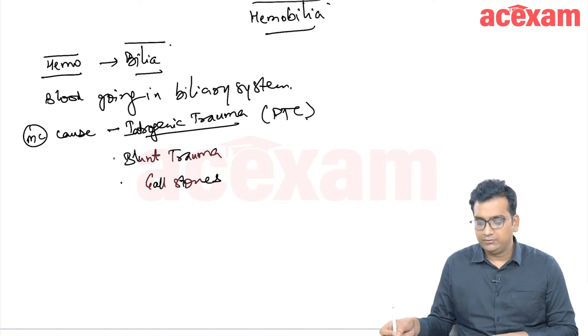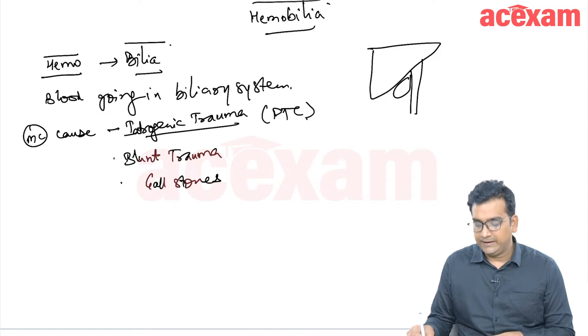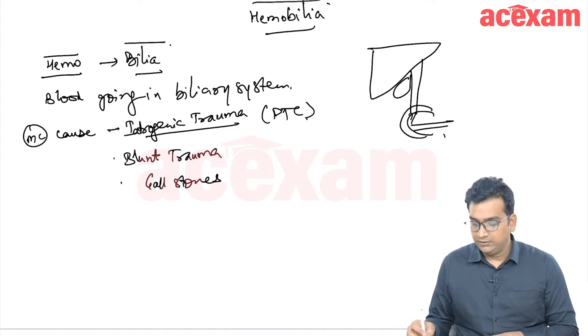This diagram will give you a basic idea regarding hemobilia. This is liver, this is gallbladder, then this is bile duct. And this bile duct is going in the duodenum. It is joining the pancreatic duct.